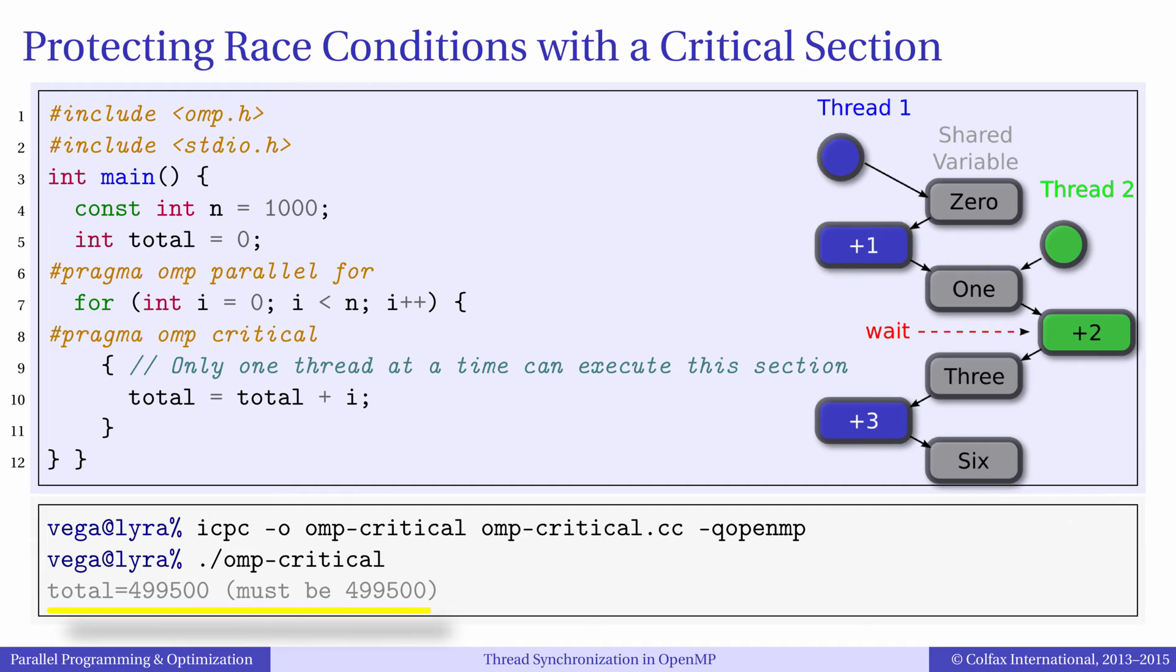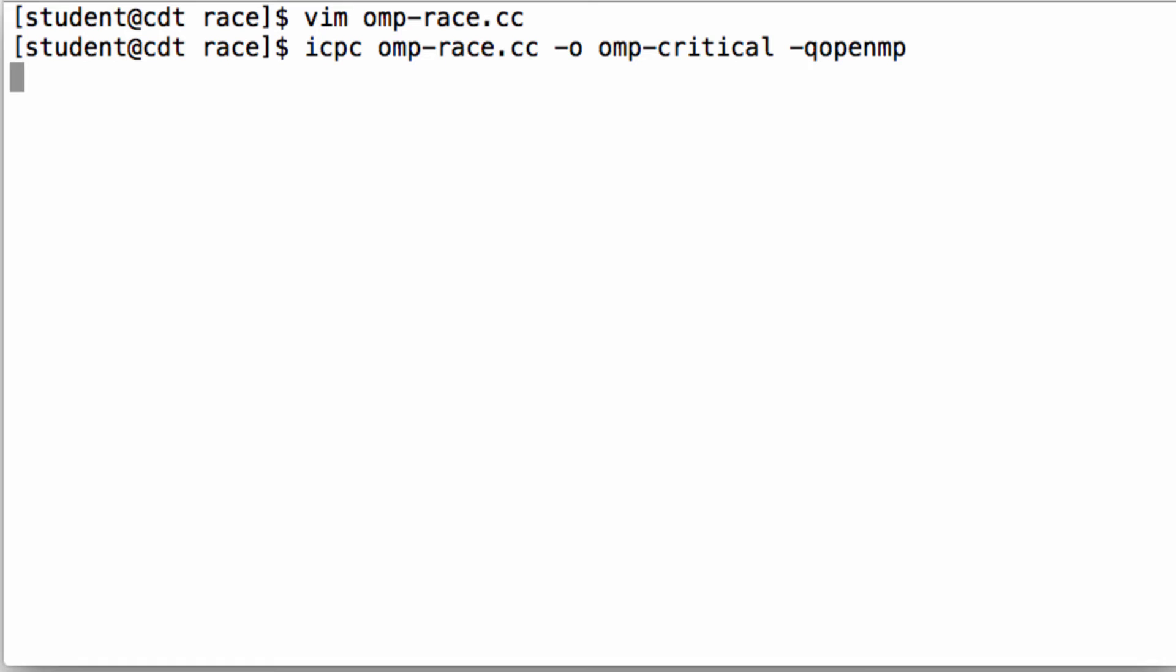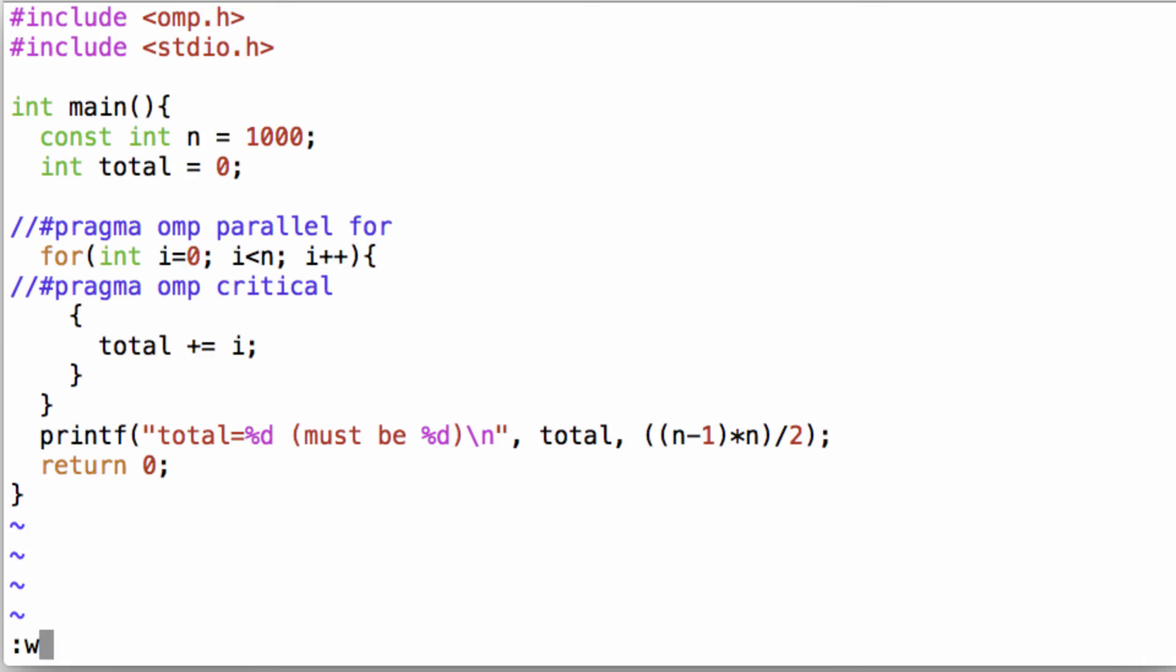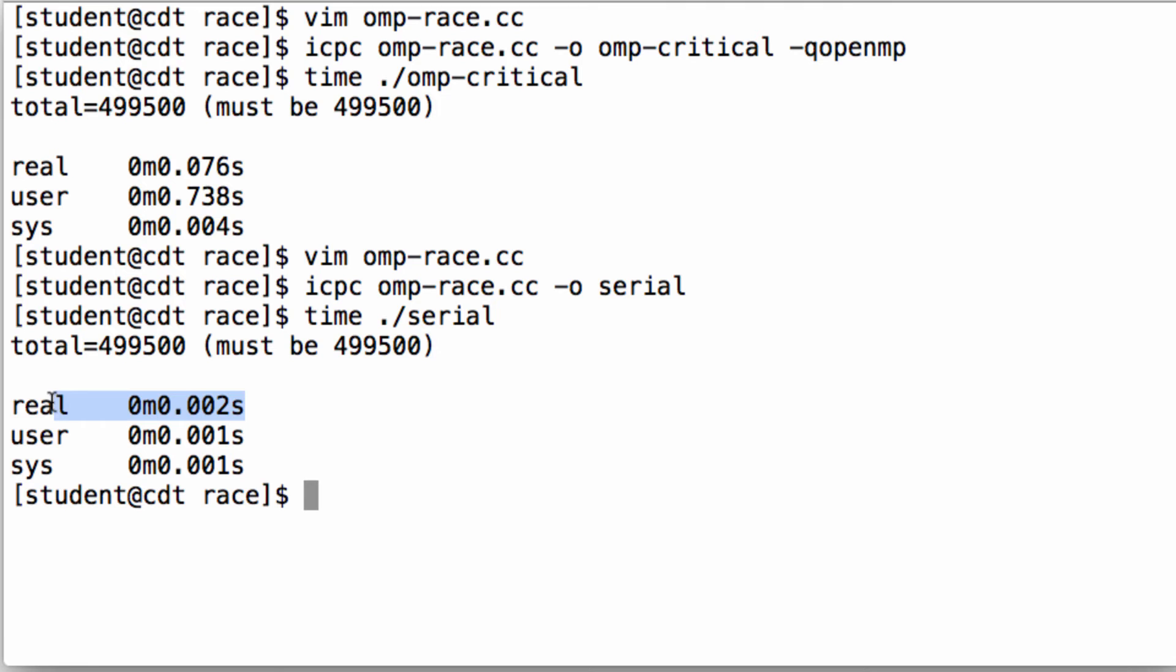Running this code produces correct results. However, the code runs very slowly because it is essentially serialized. Furthermore, enforcement of the mutex requires a lot of resources so the code in fact may run slower than if the loop was single threaded.